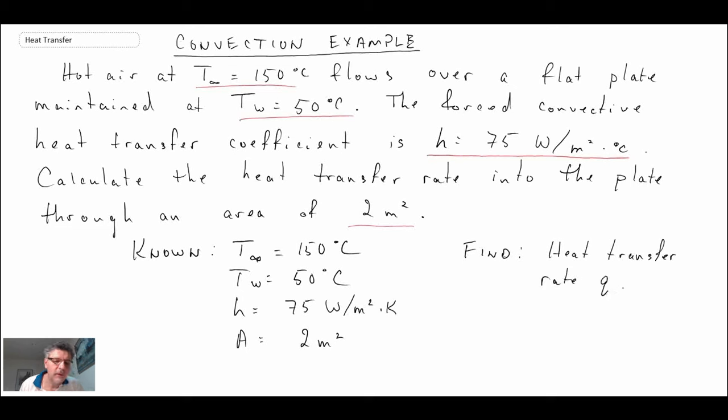We're told to find the heat transfer rate. Now one thing to notice: when I wrote out the convective heat transfer coefficient, I used units of watts per meter squared Kelvin, whereas in the problem statement it was watts per meter squared degrees C. Please be aware that those are identical. There is no difference from one to the other. They are the same thing.